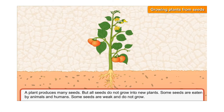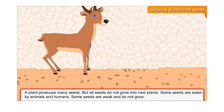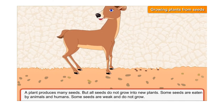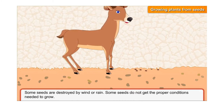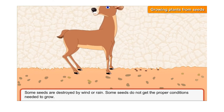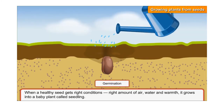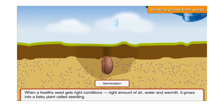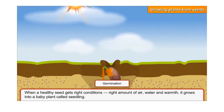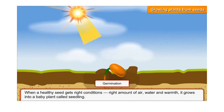A plant produces many seeds, but not all seeds grow into new plants. Some seeds are eaten by animals and humans. Some seeds are weak and do not grow. Some seeds are destroyed by wind or rain. Some seeds do not get the proper conditions needed to grow. When a healthy seed gets the right conditions — the right amount of air, water, and warmth — it grows into a baby plant called a seedling.